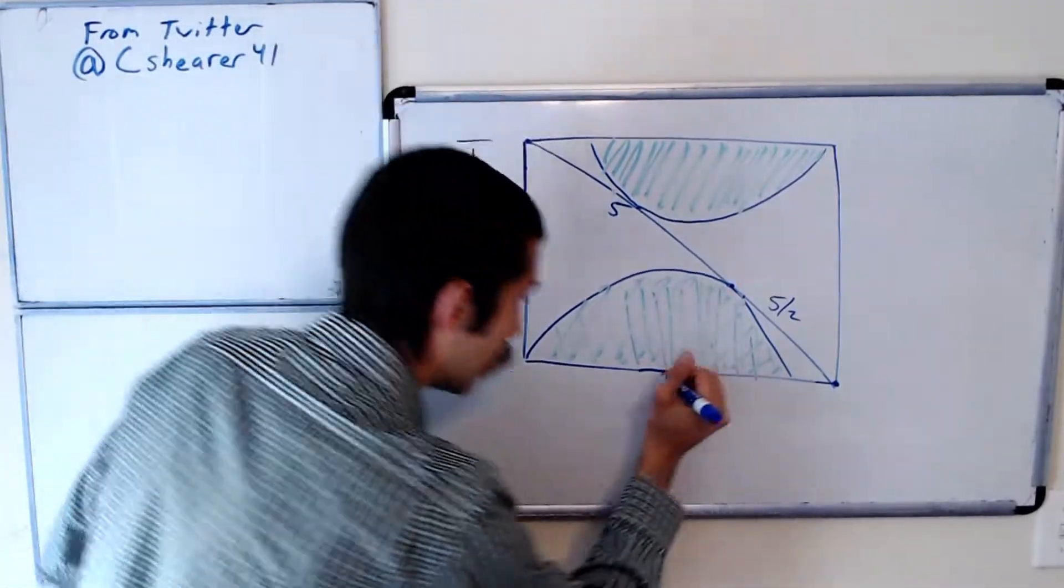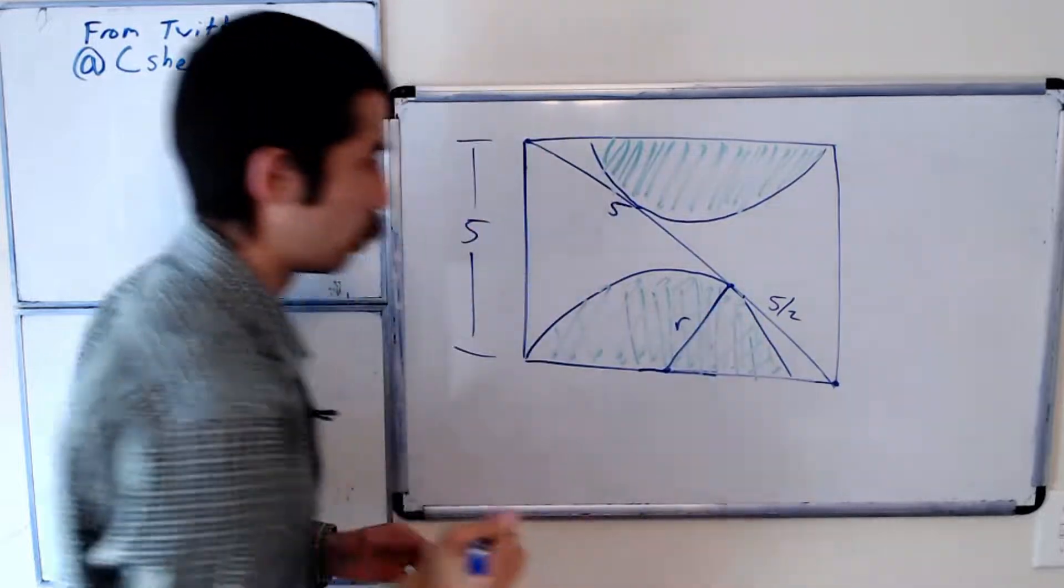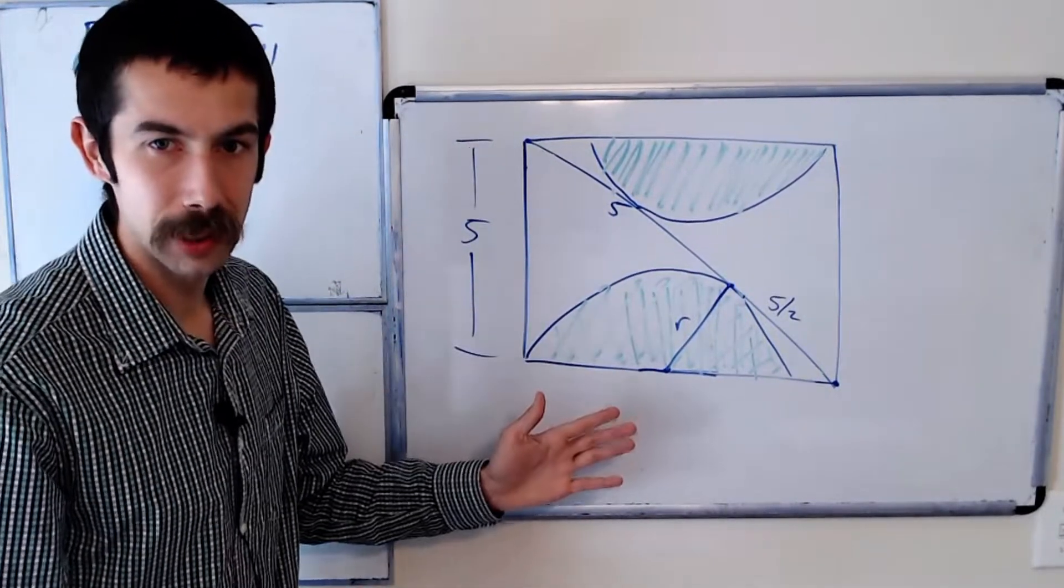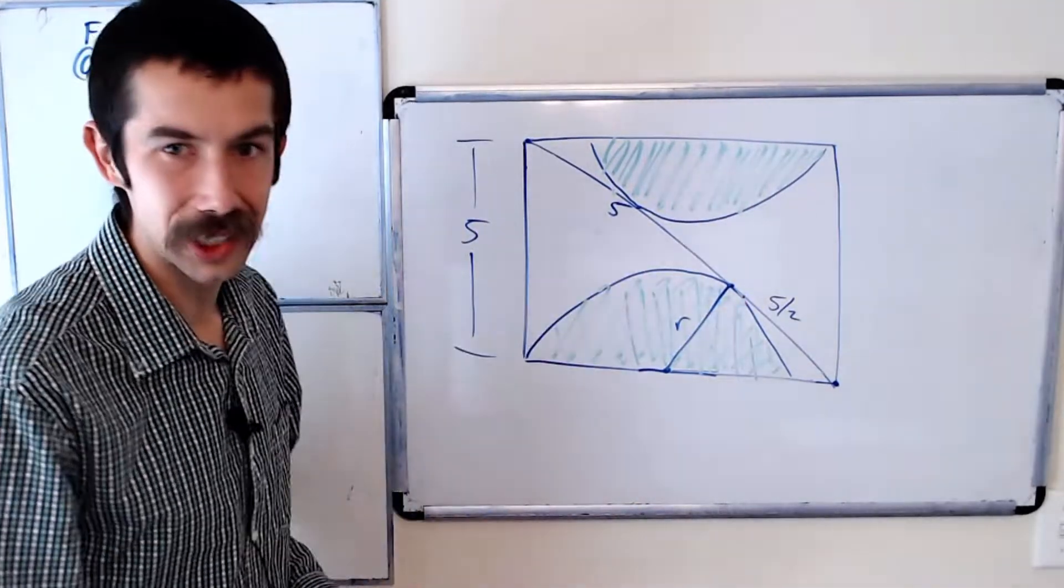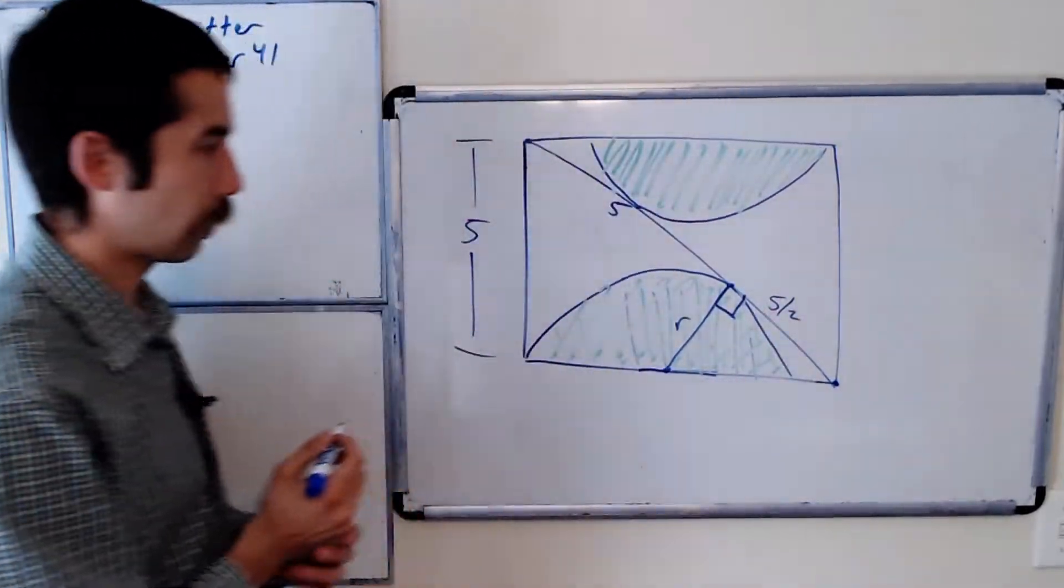Our goal by the end is to find the radius, which we call r. And a fact from geometry, maybe you remember this, maybe you don't. The radius hits its tangent at a right angle.